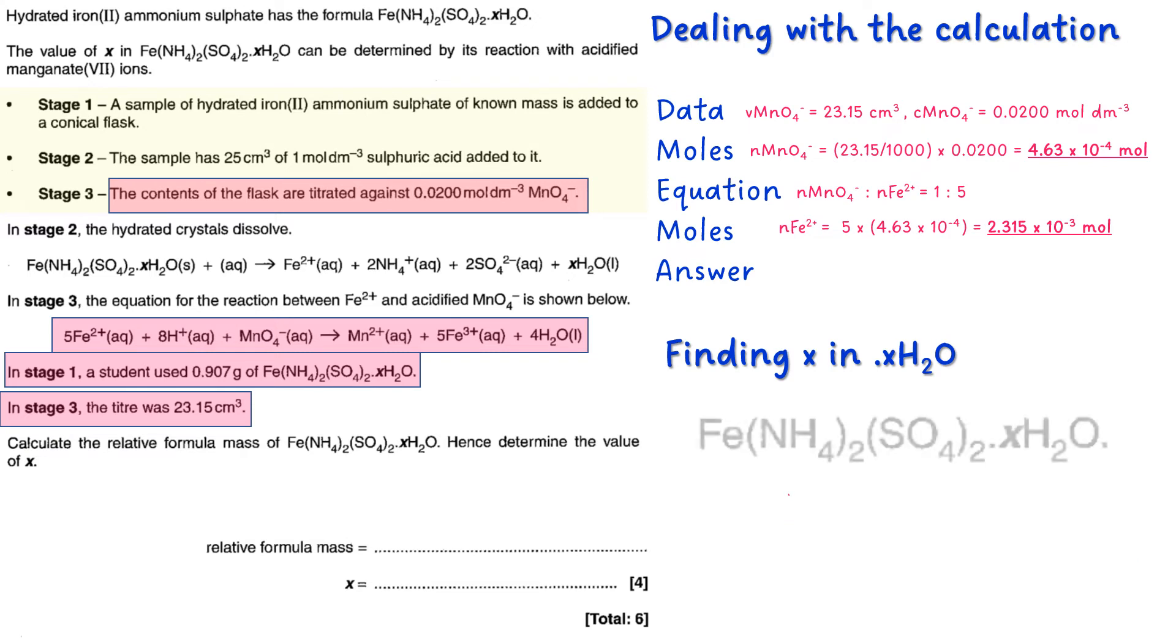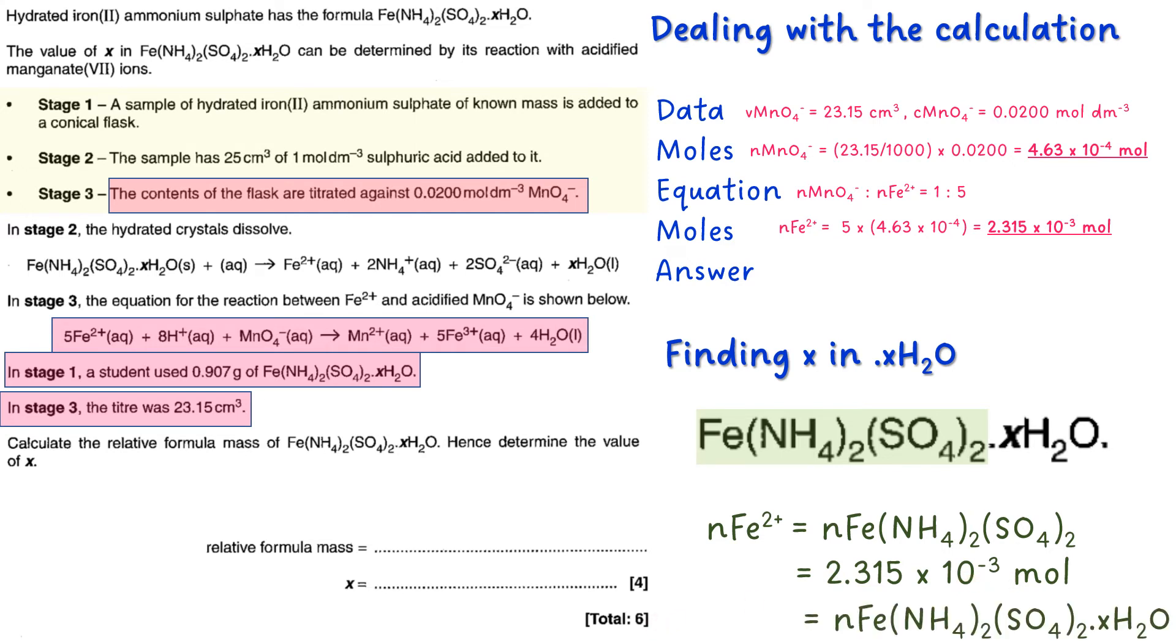The next thing to do is to take it again, but this time look at how many moles you have. So the number of moles of iron that we worked out is the same as the number of moles of this. So there's one iron in this formula. So therefore those are the same. So that's also going to be 2.315 times 10 to the minus 3 moles. So that means that the hydrated version is also going to be 2.315 times 10 to the minus 3 moles.